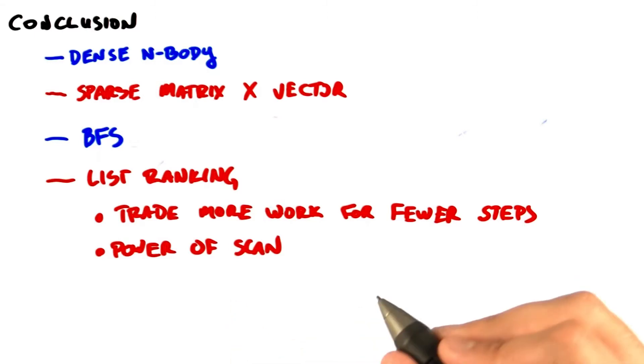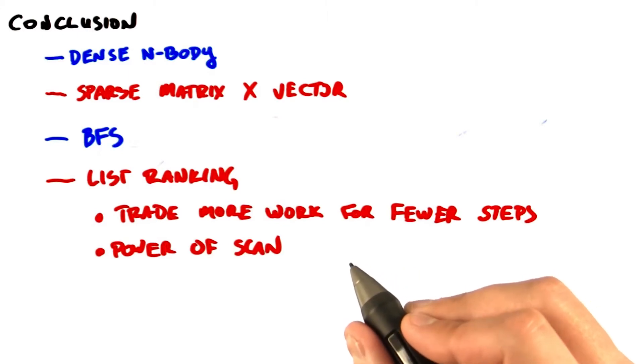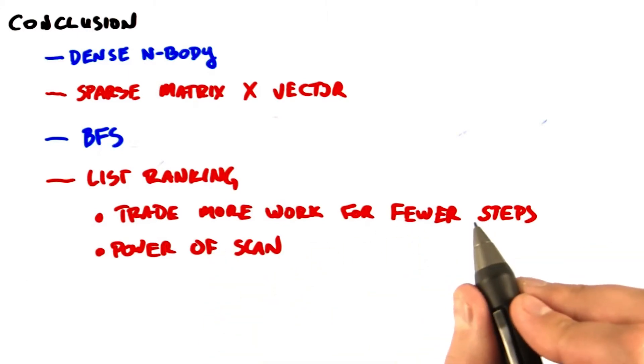List ranking. This is a good example of a problem that is not inherently parallel. To solve it well on a GPU, we use the important technique of trading more work for fewer steps.